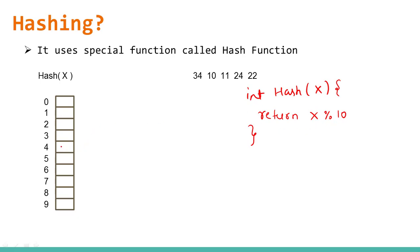So 34 is stored at index 4. Then for 10: 10 % 10 = 0, so we store 10 at index 0. For 11: 11 % 10 = 1, so we store 11 at index 1. Then for 24: 24 % 10 = 4, and index 4 is written — but we already have 34 stored there.